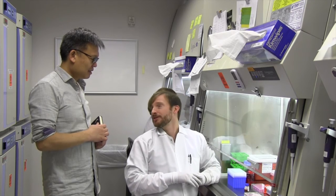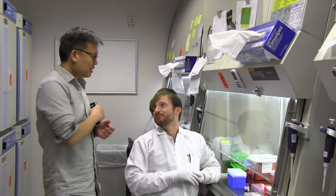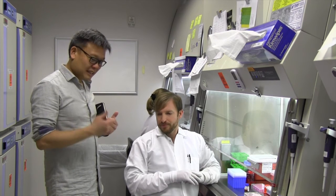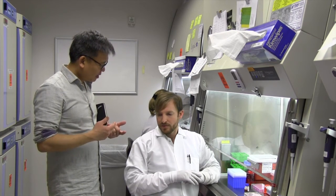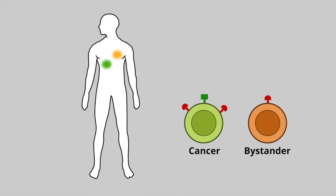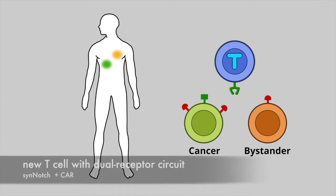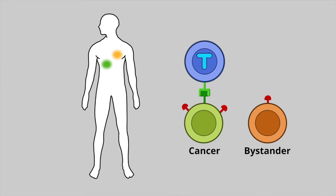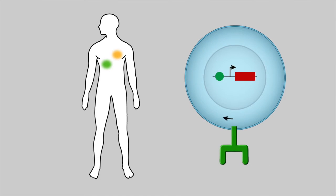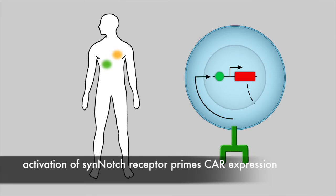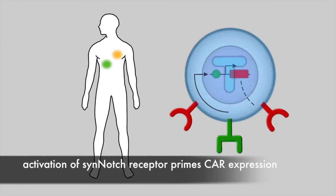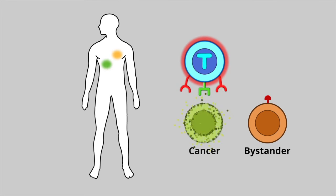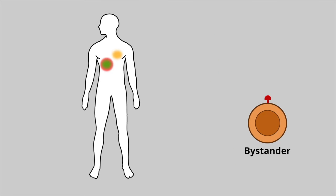We thought that by incorporating SynNotch receptors into CAR T cells, we could make them much smarter, making them dependent on recognition of multiple antigens. We designed a T cell that normally only expresses a SynNotch receptor that detects one ligand — here the green antigen. But engagement of this receptor will trigger expression of a CAR receptor directed against a second antigen, in this case the red molecule. So only after detecting the first antigen will the cell become armed for killing.